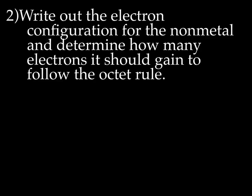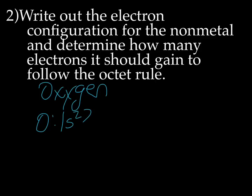Next, we need to write out the electron configuration for the non-metal and determine how many electrons it should gain to follow the octet rule. So for our example, we'll use oxygen. Oxygen is 1s2, 2s2, 2p4. So he needs to become 2p6. He has to add two more electrons. So he's going to be O2-.